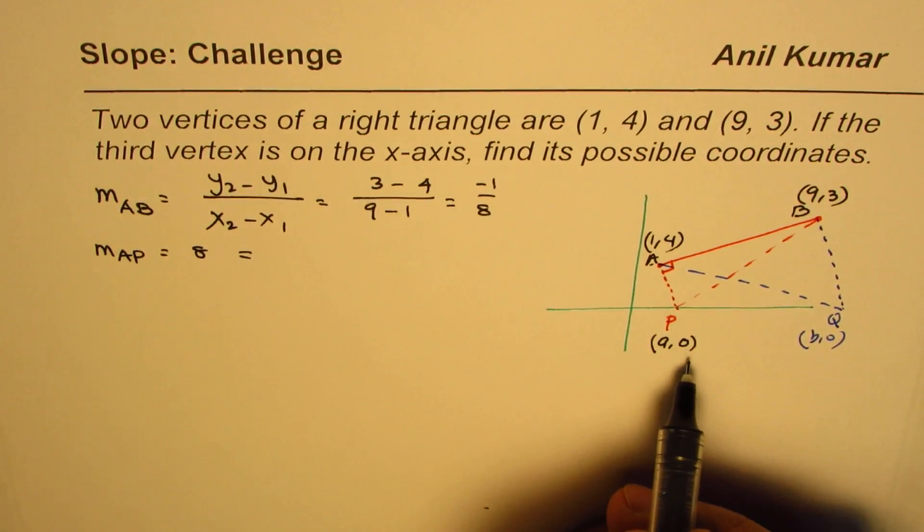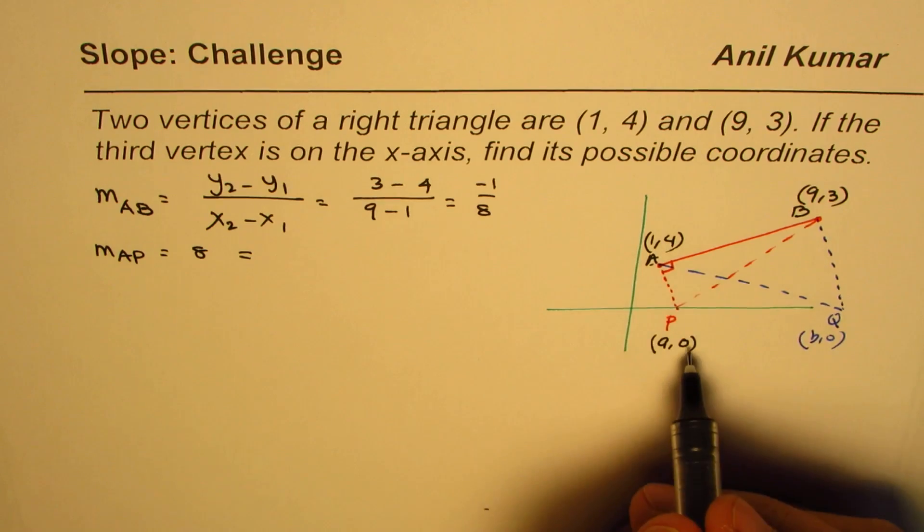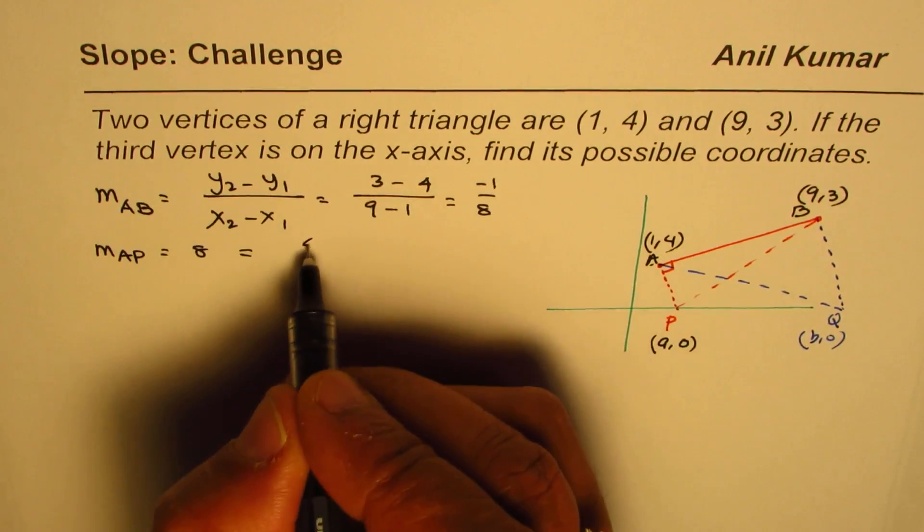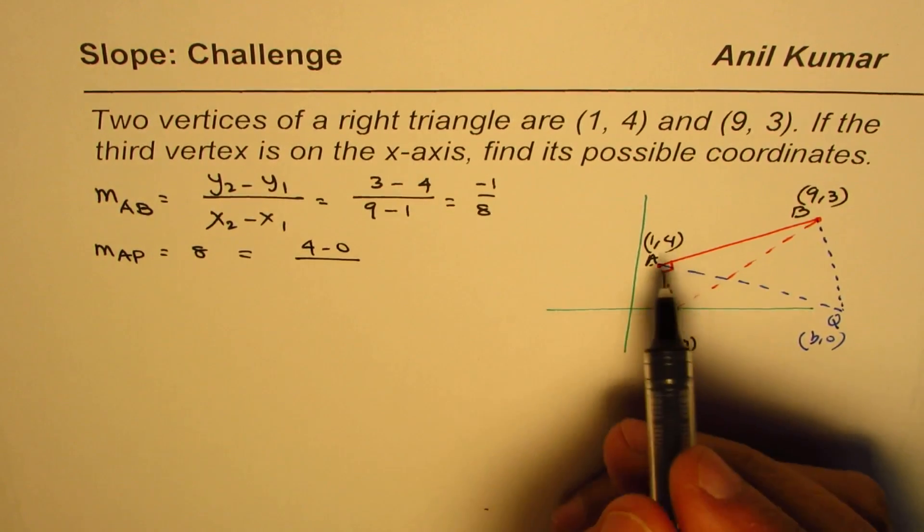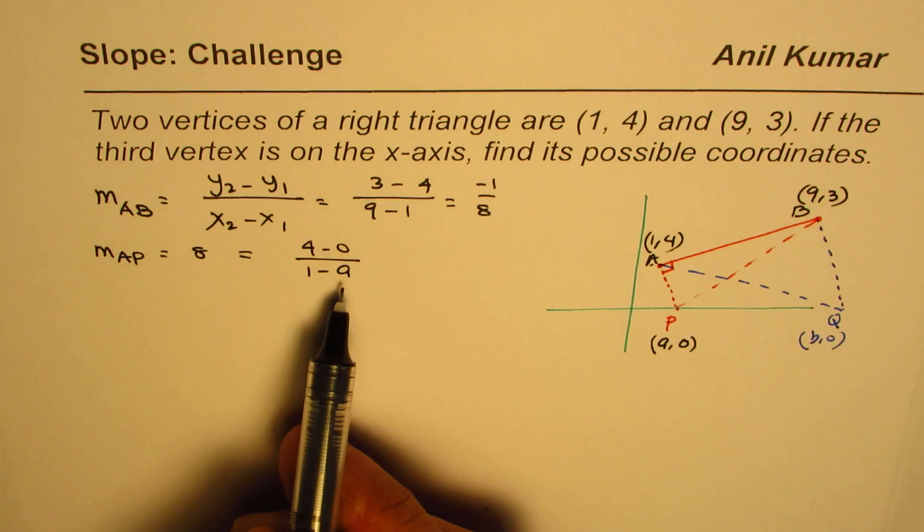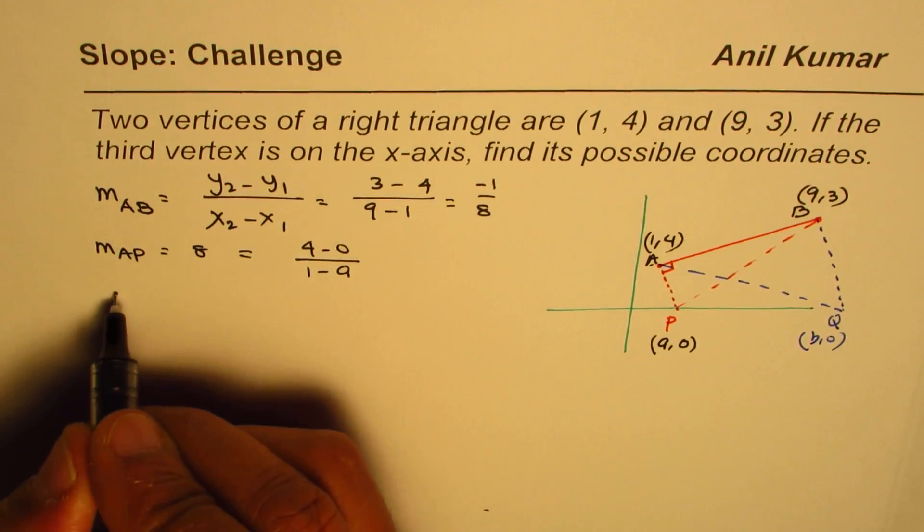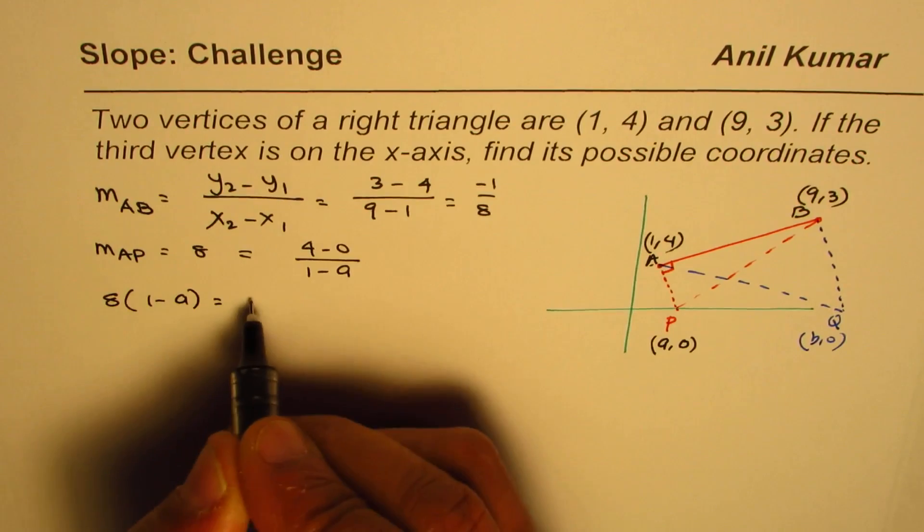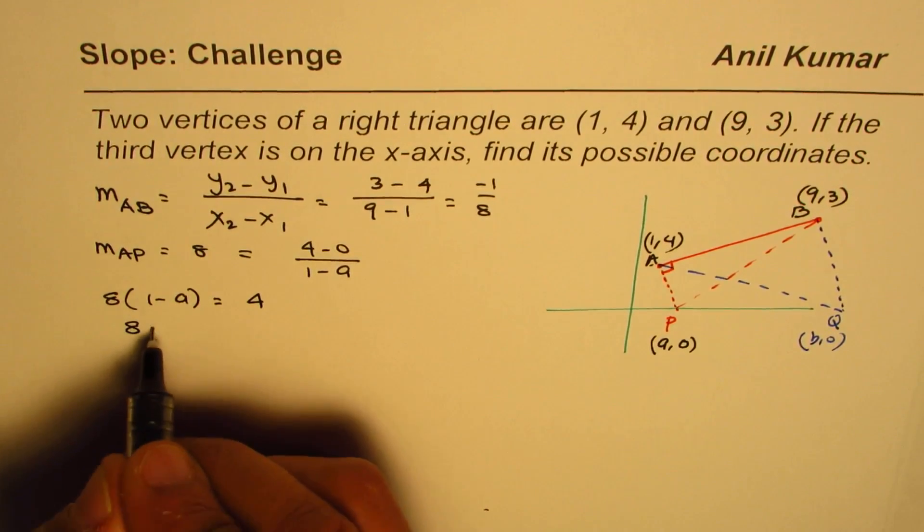We can find a by cross multiplication. So we have 8 times (1 - a) equals 4. That's 8 - 8a equals 4.